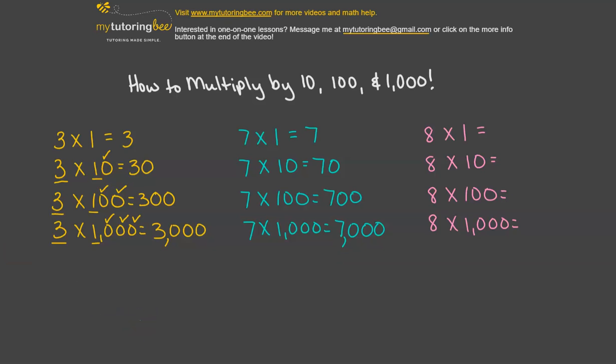All right. And I bet that you will be able to do this last set pretty quickly. We're going to go through it really quickly. 8 times 1 is 8. 8 times 10 is 80. 8 times 100 is 800. And then 8 times 1,000 is 8,000.